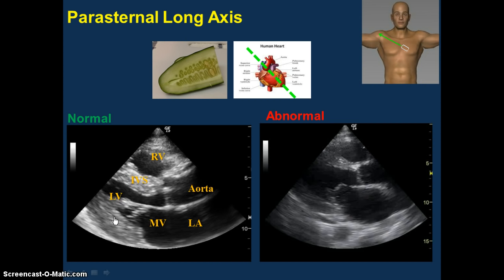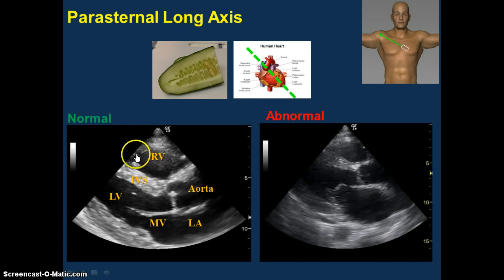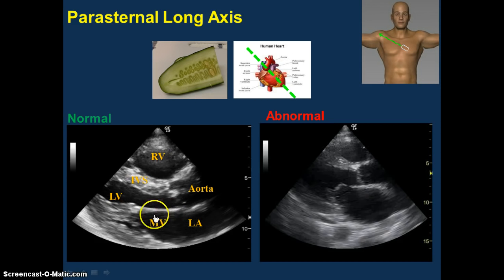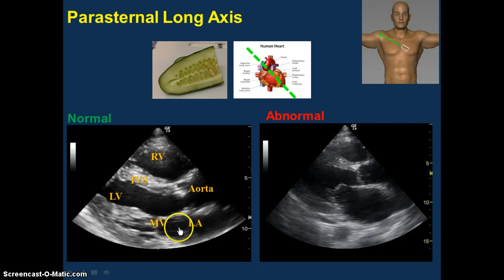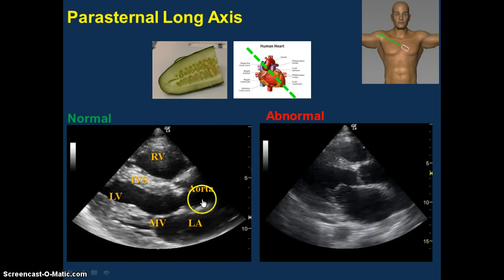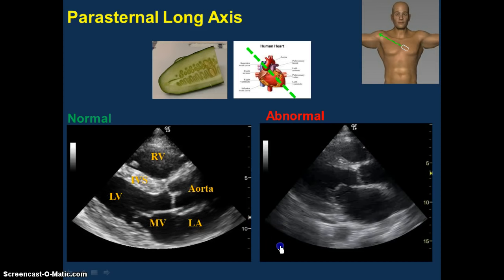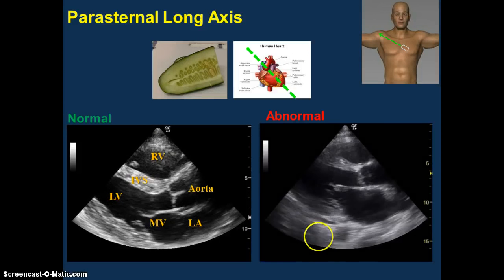We're just going to go over a couple of basic ones for the purpose of the CLU protocol. The most anterior structure of the heart is going to be the right ventricle. The next thing you're going to hit is the interventricular septum, followed by the left ventricle. Flapping away here in the middle of the screen is going to be your mitral valve — this is the anterior leaflet, this is the posterior leaflet. This here is going to be the left atrium, this is your aortic root coming out, and this is your aortic valve. So right away, that's a normal pumping heart here.